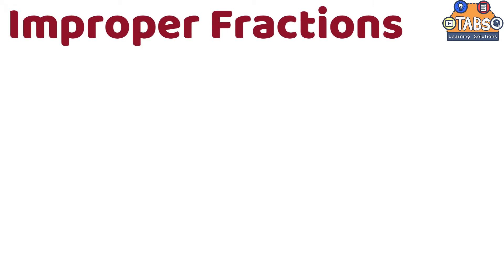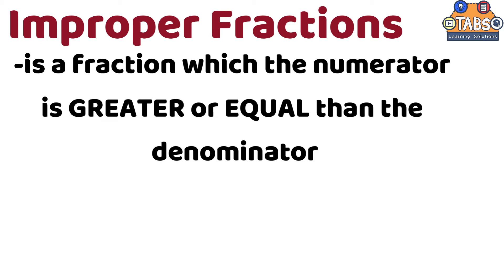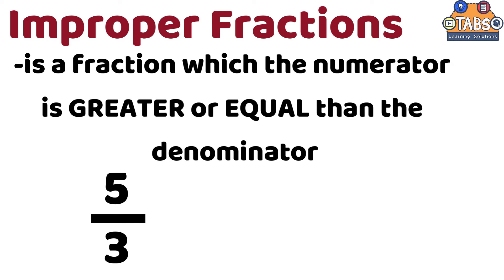Improper fractions — an improper fraction is a fraction in which the numerator is greater than or equal to the denominator. Examples of improper fractions are five-thirds and nine-eighths.